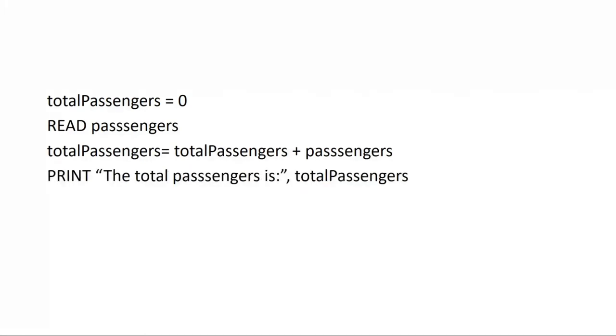Afterwards we apply the cumulative total formula: total_passengers = total_passengers + passengers. So cumulative total equals cumulative total plus variable. Total_passengers will be storing our total passengers, and the passengers variable will be storing the number of passengers that pass the station. After that we'll just print the results — 'The total passenger is' — and whatever figure is stored in the variable will be printed along with that message on the screen. For example: 'The total passengers are 100' or 'The total passengers are 200'.